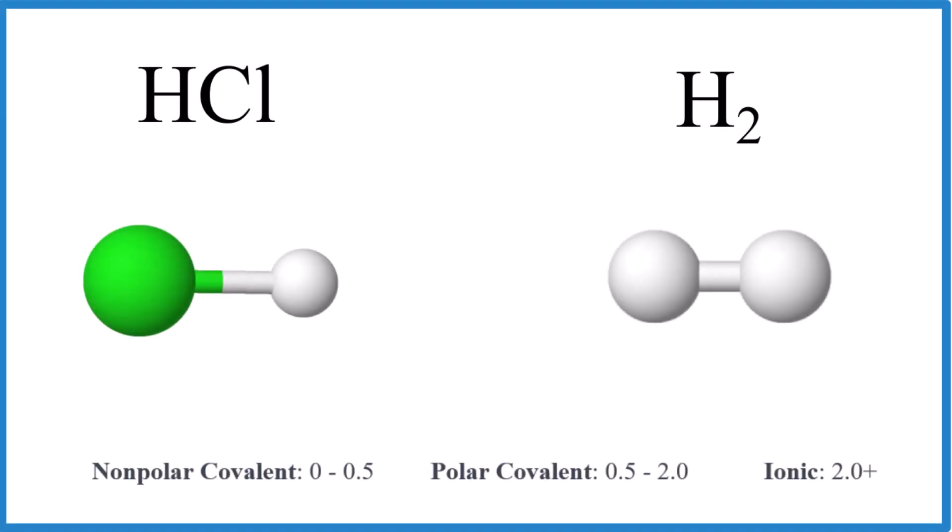So let's talk about polar and nonpolar. What is the difference in polar and nonpolar bonds? First off, ionic bonds are typically between a metal and a nonmetal. They're above 2.0. We're not going to talk about those. Electrons are transferred there. We're going to talk about polar and nonpolar.